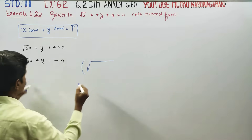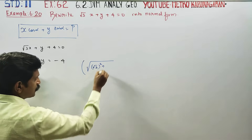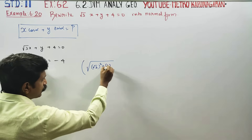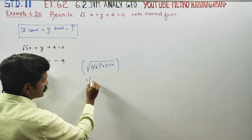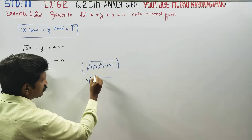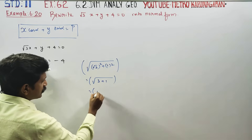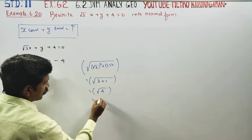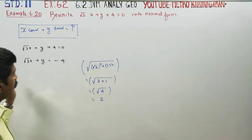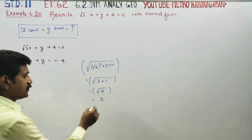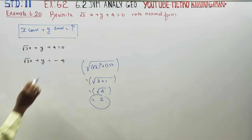The coefficient of x squared is (√3)² = 3, and the coefficient of y squared is 1². So the square root of the sum is √(3 + 1) = √4 = 2. We divide all terms by 2.